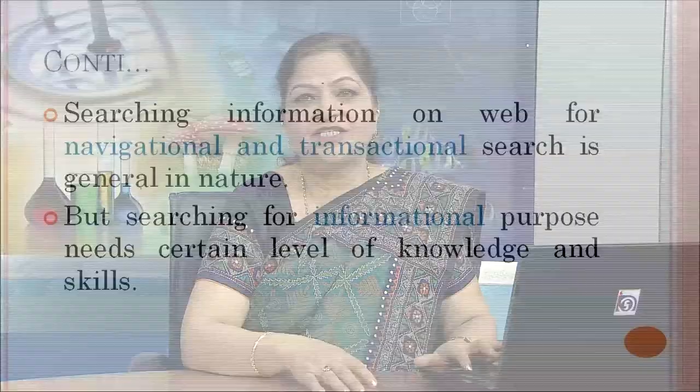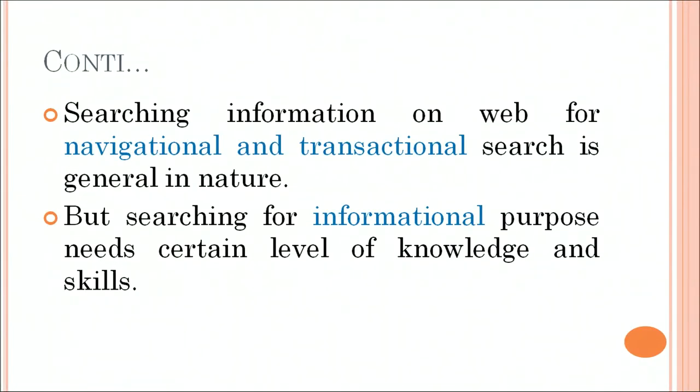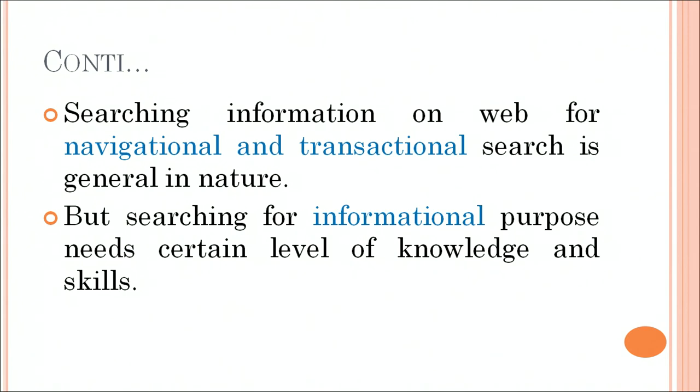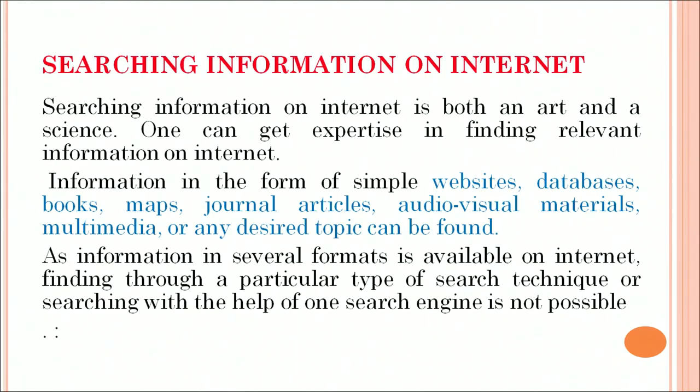After searching information on the web, navigational and transactional searches are general in nature — we can search through any search engine. But searching for an informational purpose needs a certain level of knowledge and skill. Searching information on the internet is both an art and a science. One can get expertise in finding relevant information on the internet. Information in the form of simple websites, databases, books, maps, journals, articles, audiovisual materials, multimedia, or any desired topic can be found.